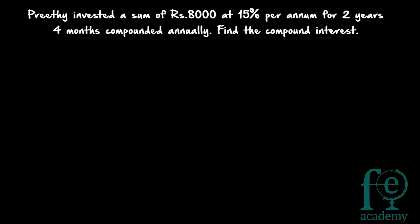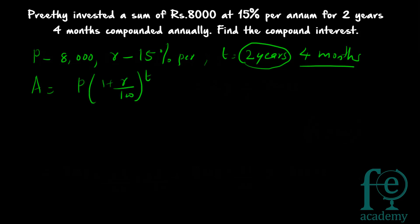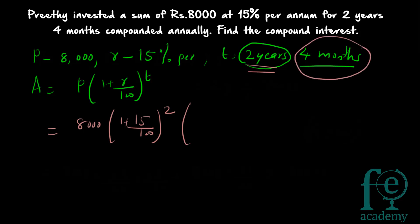Our second question: Preeti invested a sum of Rs.8,000 at 15% per annum for 2 years 4 months, compounded annually. Find the compound interest. Compound interest = Amount − Principal. Here, principal = 8,000, rate = 15% per annum, and time = 2 years and 4 months. Since the time is not a whole number, you have to find the compound interest separately for 2 years and for 4 months.